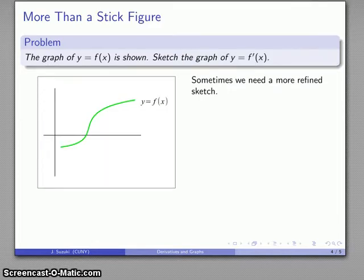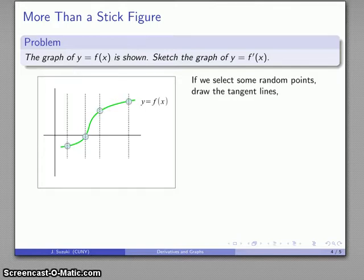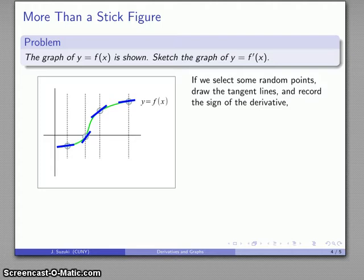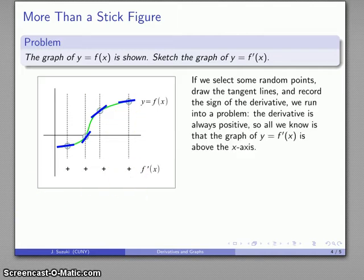Now sometimes we need something a little more refined. Here's a different graph of y equals f of x. We'll do the same thing — pick some random points, draw tangent lines, and record the sign of the slope of the line tangent to the graph. In this case, all of our tangent lines have positive slope, which is a little problematic because all that tells us is that our points will be somewhere above the x-axis — we don't know exactly where, so we need a bit more detail.